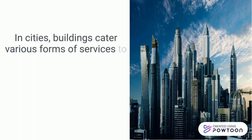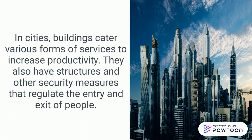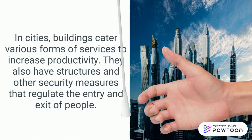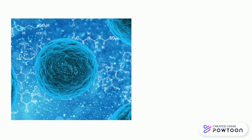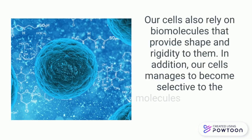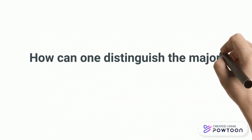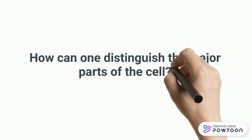In cities, buildings cater to various forms of services to increase productivity. They also have structures and other security measures that regulate the entry and exit of people. Did you know, class, our cells also rely on biomolecules that provide shape and rigidity to them. In addition, our cells manage to become selective to the molecules that will move through it. Now, the big question is: how can one distinguish the major parts of the cell?